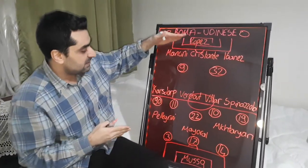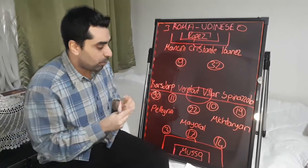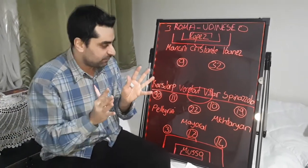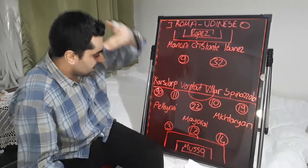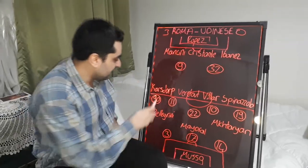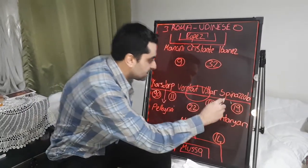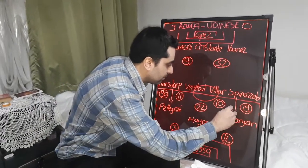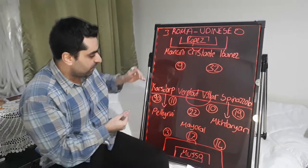Roma played in a 3-4-3, Paolo Fonseca's classical formation. In Roma attacks, Karstorp and Spinazzola came forward and supported the attacks together.